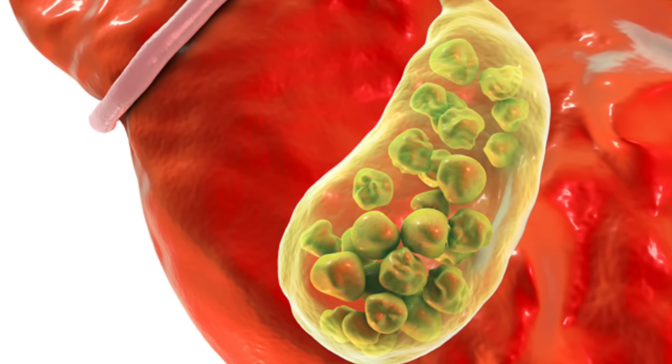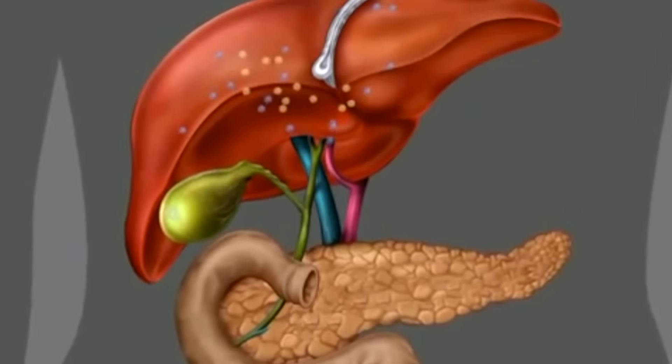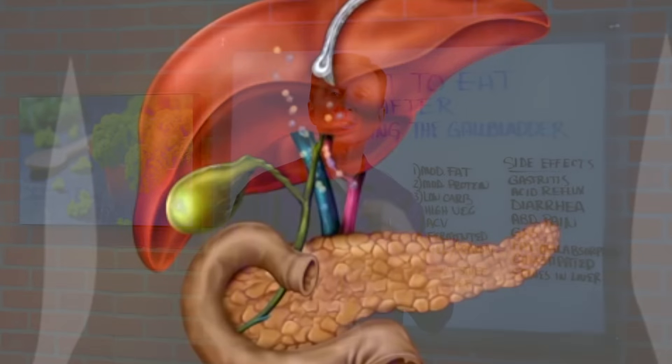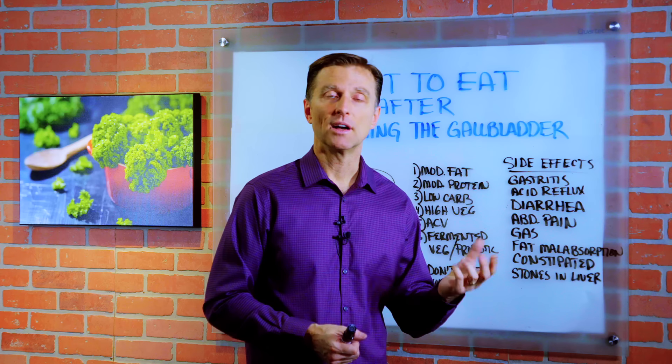Number two, high levels of insulin. So a highly refined carbohydrate diet, a lot of junk food, a lot of sugar, and also certain side effects from medications will create gallstones and the destruction of the gallbladder.